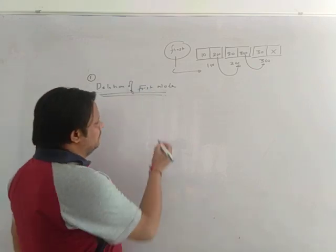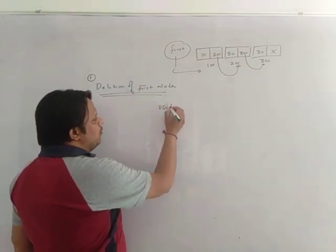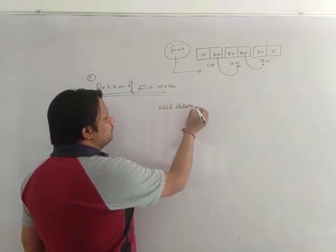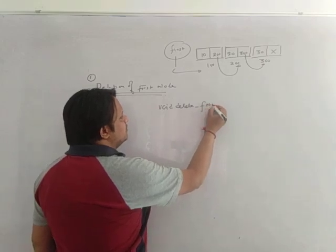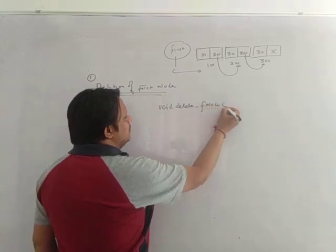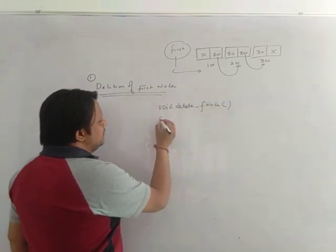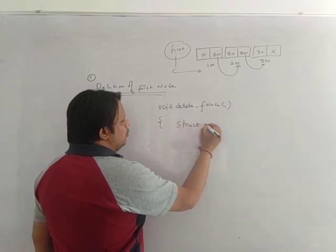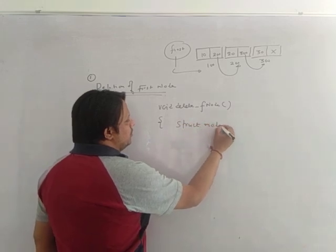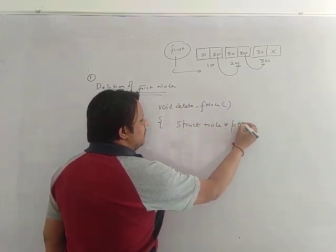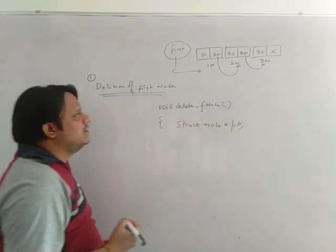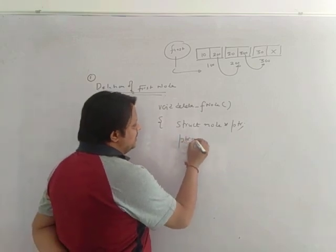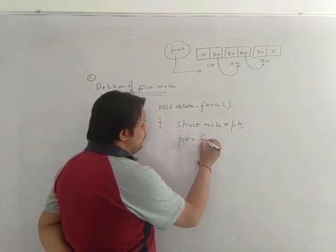So for this, let's write a function: void delete_first_node. I am taking a pointer and writing struct node star ptr. After this, I am writing ptr is equal to first.